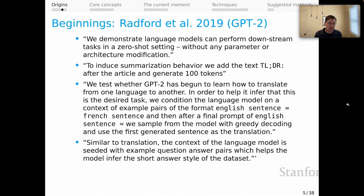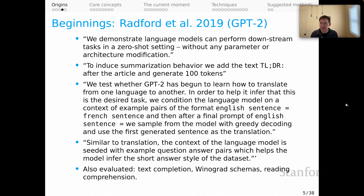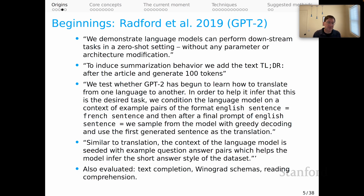They also applied a similar approach to QA, saying: 'Similar to translation, the context of the language model is seeded with example question-answer pairs, which helps the model infer the short answer style of the dataset.' Again, demonstrations could help the model see what the implicit task instruction was. They also evaluated text completion, Winograd schemas, and reading comprehension, among others. It's a very impressive and thorough exploration, very open about the benefits and limitations of the methods — a very impressive and creative paper.